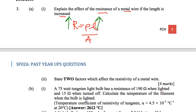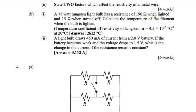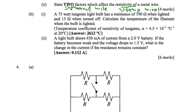Number two: state the two factors that affect the resistivity of the wire. The two factors that affect resistivity are: first, the type of material of the wire, and second, the temperature of the wire.